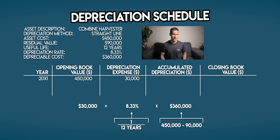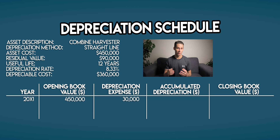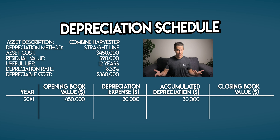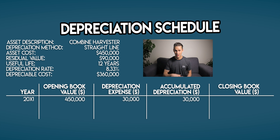Make sense? Next, we need to work out your accumulated depreciation, which is the sum of all depreciation incurred to date. In year 1, this is $30,000 — exactly the same as your depreciation expense. Your closing book value is the carrying amount of your combine harvester in your balance sheet at the end of the year. We can work it out by taking your opening book value and subtracting your depreciation expense: $450,000 minus $30,000 is $420,000.